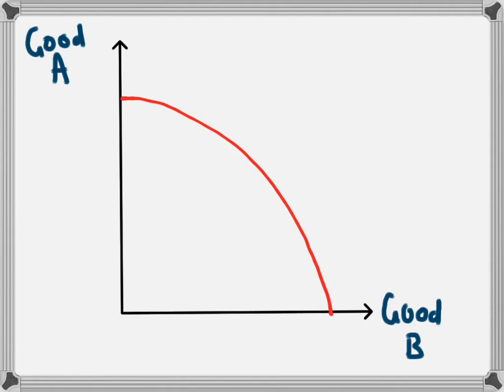There is a video about the production possibility frontier if you're not sure how this diagram works, but basically the red line is showing the possible combinations of good A and good B which could be produced by the economy at a particular point in time.